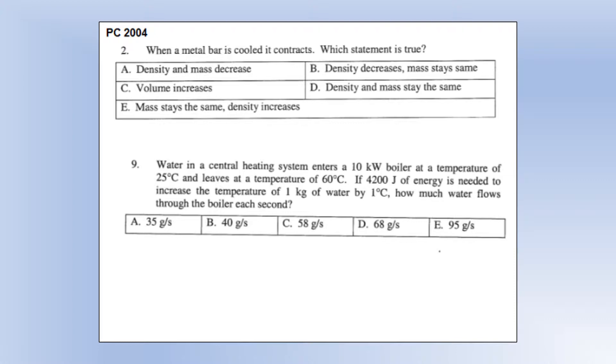Volume increase. No, its volume would decrease. Density doesn't change, as D says, so that's not right. So then it must be E. Mass stays the same. Density increases, because it occupies a smaller volume.